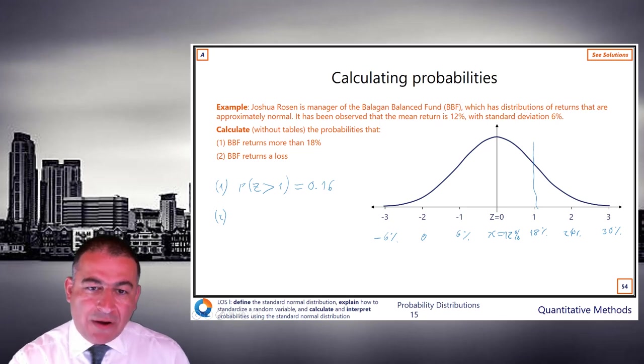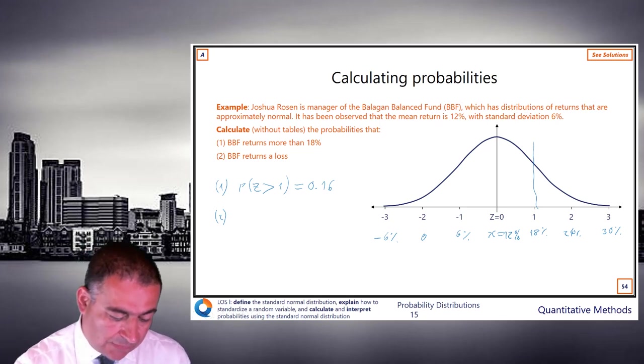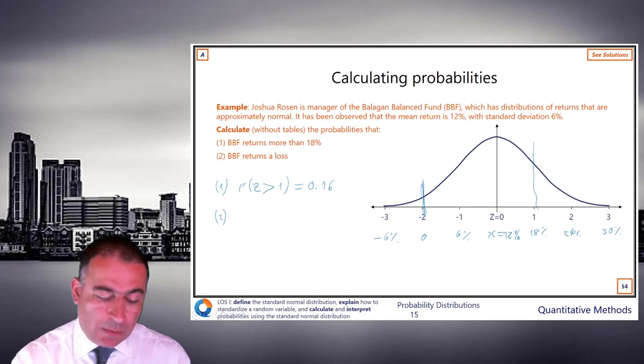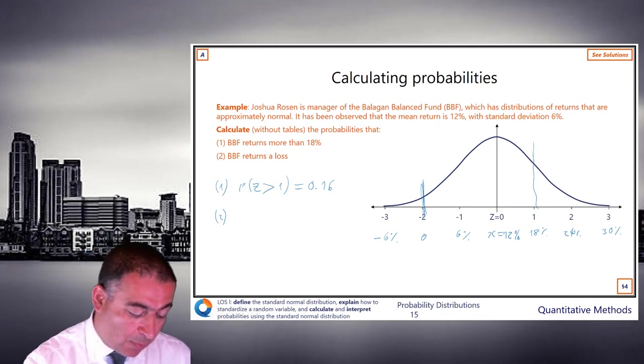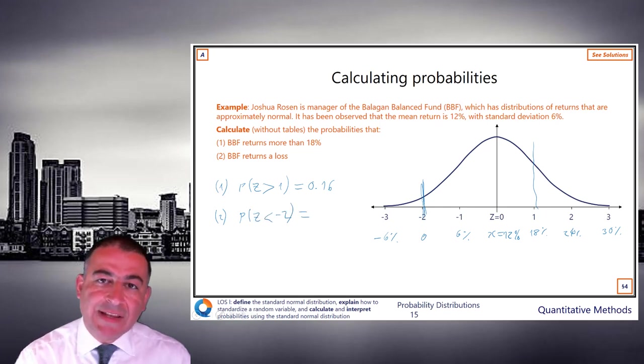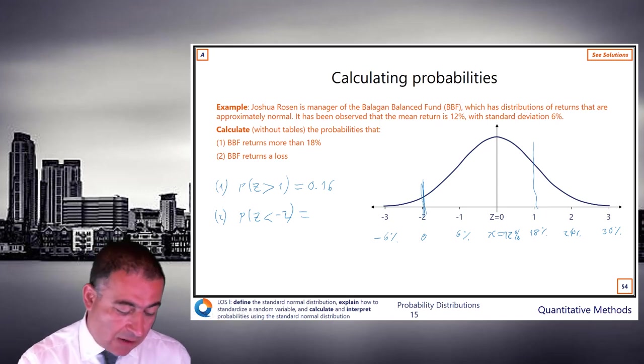Question 2. BBF returns a loss. Well, here's our loss. So Z equals minus 2. What's the area? So BBF returns a loss. This is the probability that Z is less than minus 2. The probability that Z is less than minus 2, which is, again, one of the ones we should know, is the bottom tail, and in this case it's 0.025.